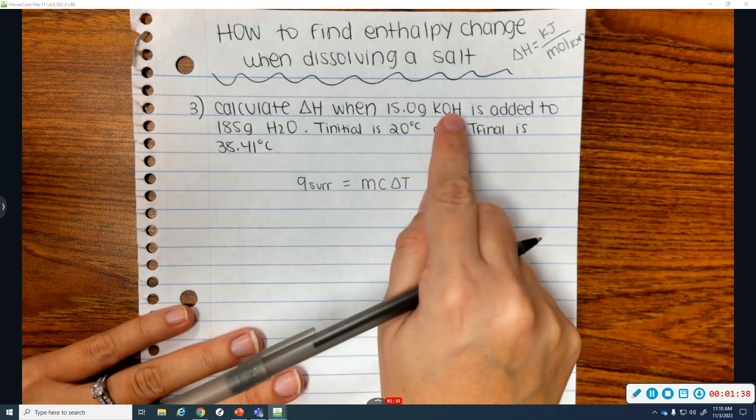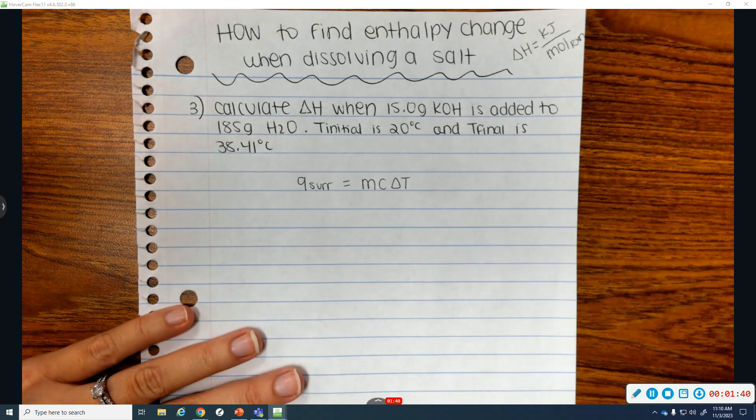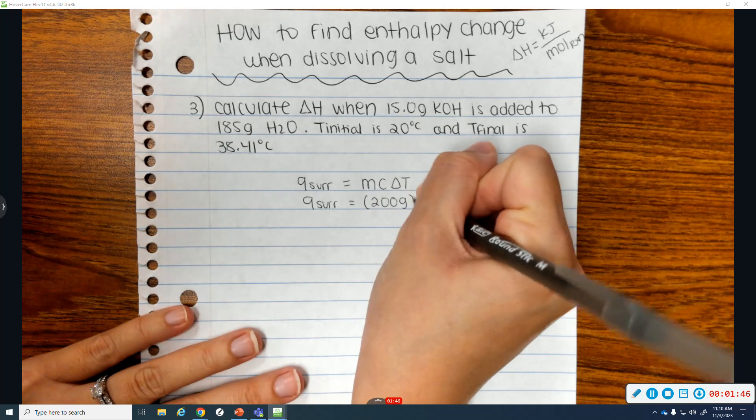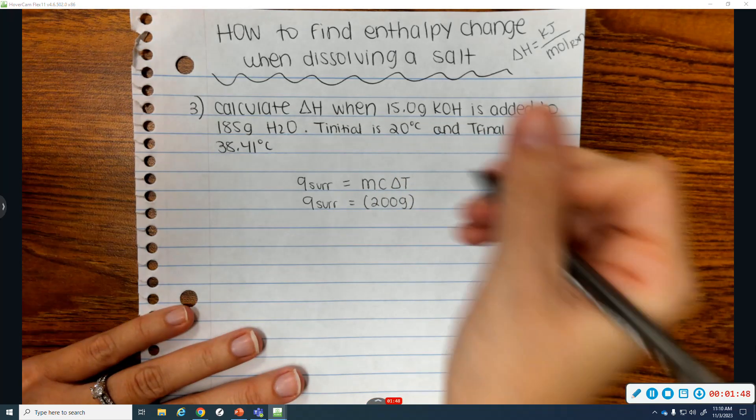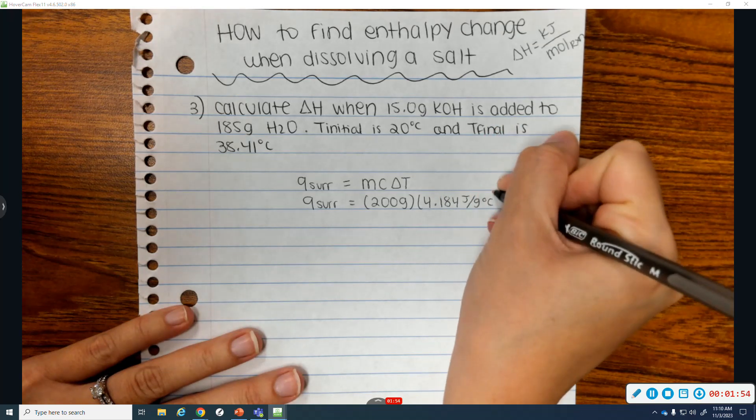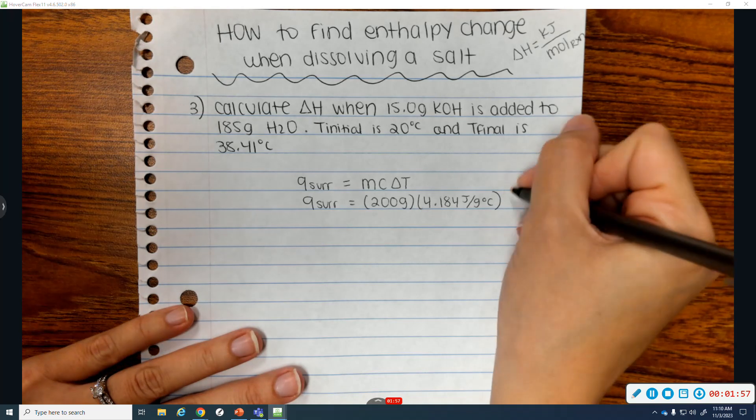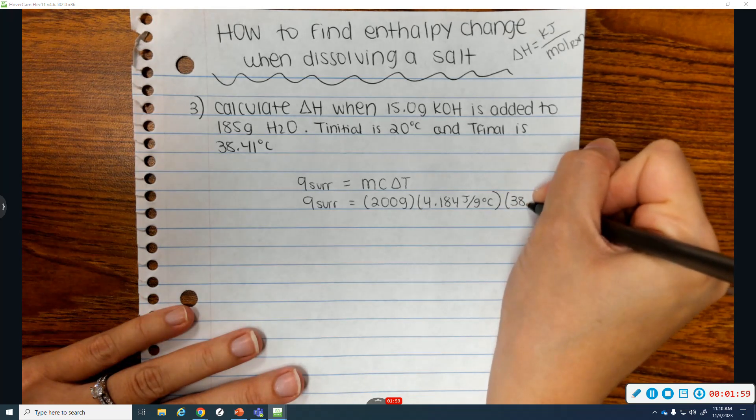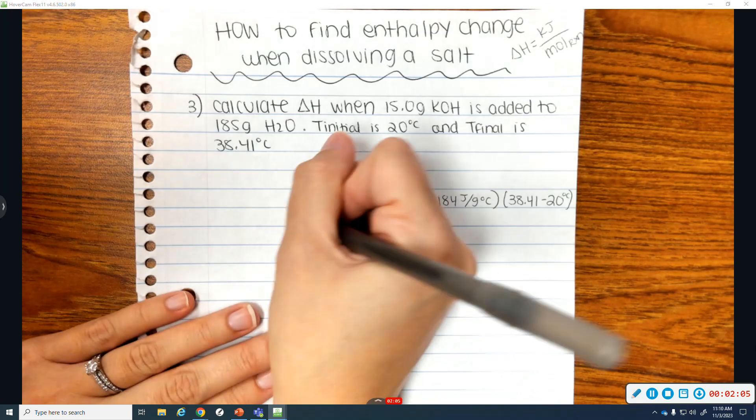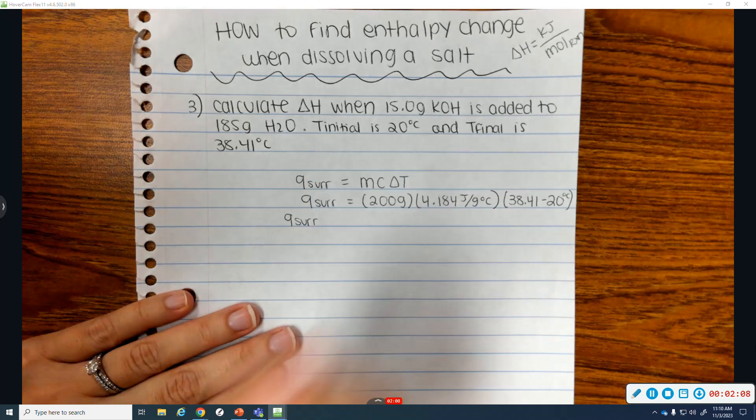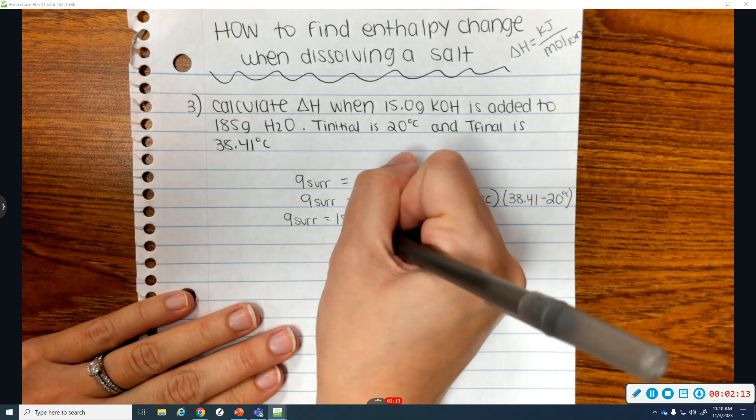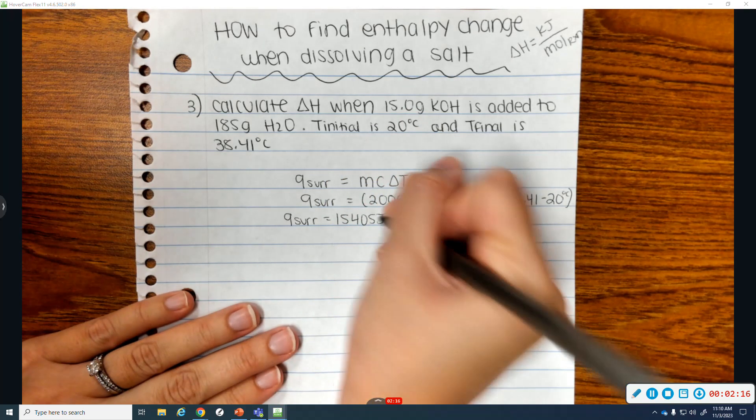The mass that you use is the mass of the KOH and water combined. So that would be 200 grams times the specific heat for water, which is 4.184 joules per gram times degrees Celsius. Delta T is final minus initial. So 38.41 minus 20 degrees Celsius. And you multiply all those values. And when we multiply them, we get the Q for the surroundings is 15,405 joules.